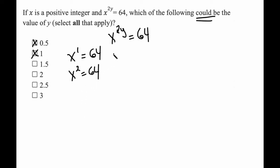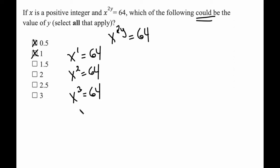How about 1.5? If x to the power of 2y is equal to 64 and we plug in 1.5 for y, then I have x to the power of 3 equals 64. Maybe you know your perfect cubes by heart, and maybe you don't. If you don't, the worst case scenario on the GRE calculator you'll have to poke around just a little bit, but you'll find that x is equal to 4 in this case. So that one also works.